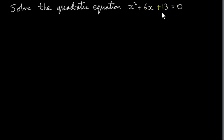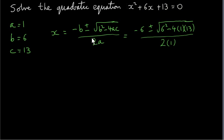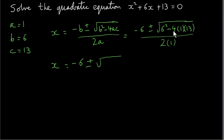Now let's look at this quadratic equation where a is 1, b is 6, and c is 13. We fill these into our formula: minus 6 plus or minus the square root of 6 squared minus 4 times 1 times 13, all divided by 2 times 1. So we get minus 6 plus or minus the square root of 36 minus 52. Inside the square root sign we get 36 minus 52, which is minus 16, and the whole lot is divided by 2.